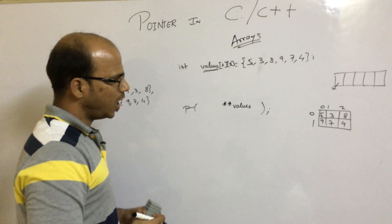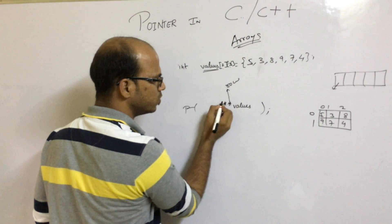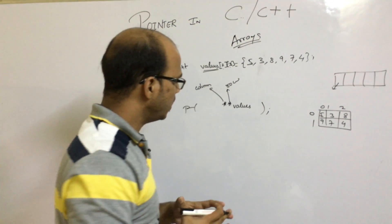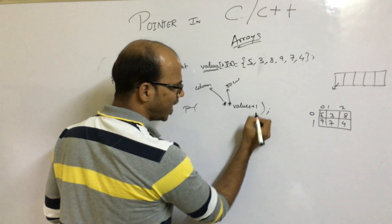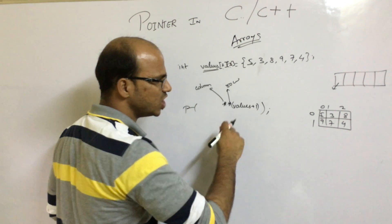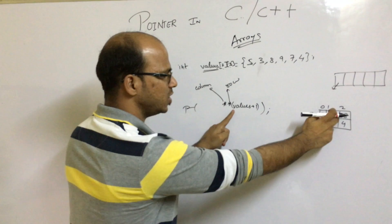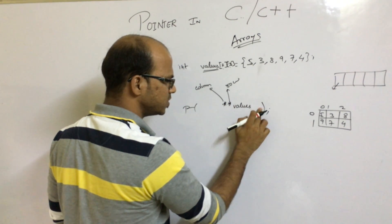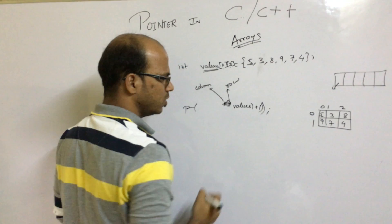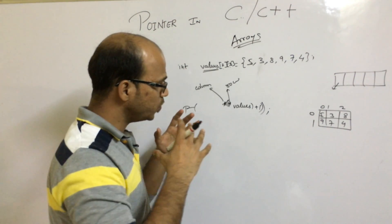To get three using double-star notation, you need to understand that the outer star controls the row and the inner star controls the column. You say star star(values + column_offset), placing the bracket correctly. Adding plus one inside the right bracket increments the column to get three. The bracket placement is critical — putting the bracket in the wrong place changes the row instead of the column, taking you to nine instead.